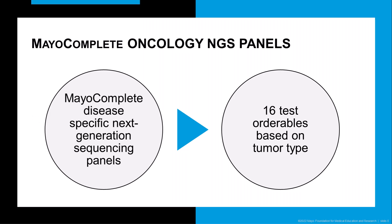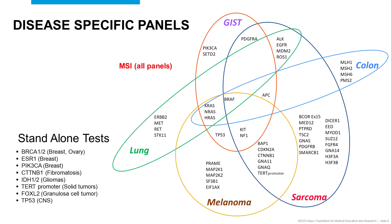The name of our tests are the Mayo Complete Oncology NGS panels. We've actually created 16 different test orderables based on tumor type. This test uses a master panel which consists of 55 genes, shown on this slide. Out of that, we have created five cancer-specific panels — one for lung cancer, one for gastrointestinal stromal tumor, one for colorectal cancer, one for melanoma, and one for sarcoma. In addition, we have several standalone tests, which I'll talk about towards the end of this presentation.